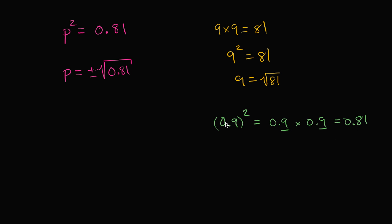In fact, we could write 0.81 as 0.9 squared. So we could write that p is equal to the plus or minus the square root of—instead of writing 0.81, I could write that as 0.9 squared.